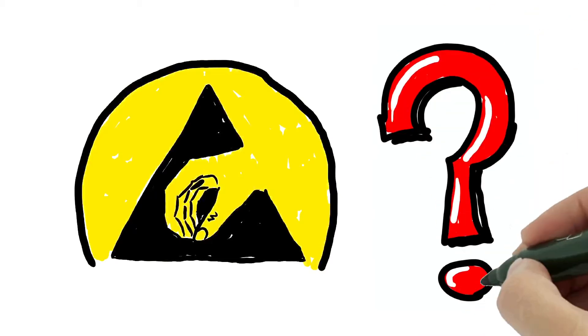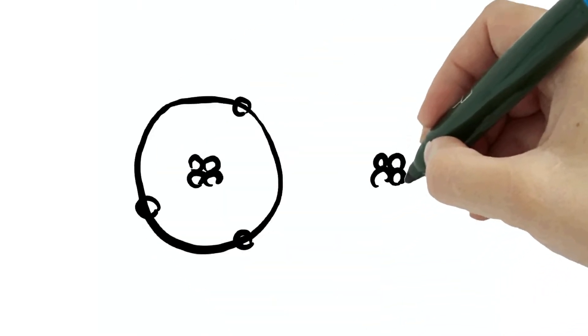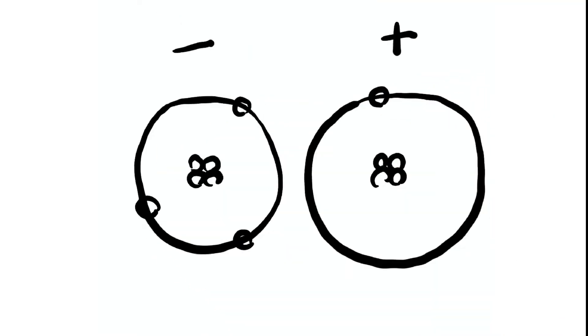So where does that static electricity come from? When an atom has fewer electrons than protons, it is positively charged. When it has extra electrons, it is negatively charged.